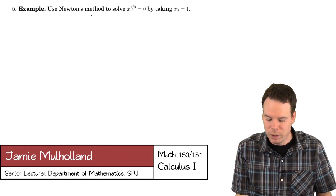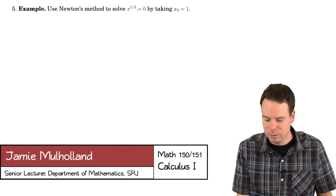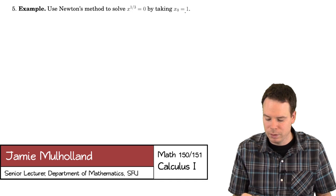Okay, so let's have a look at this next example. We want to use Newton's method to solve this equation x to the one-third equals zero by taking x not equals to one.